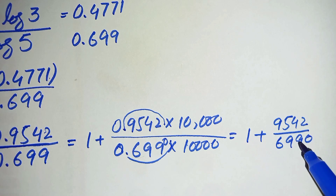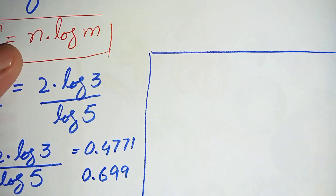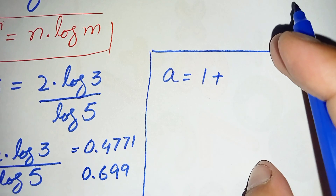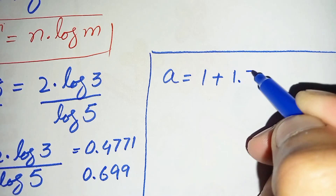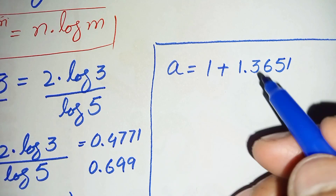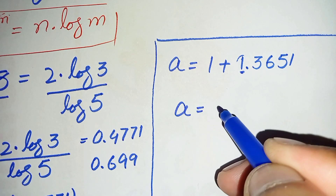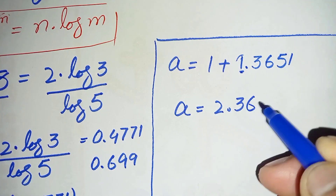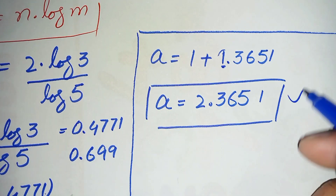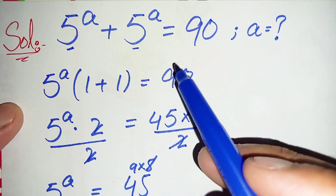We divide 9,542 by 6,990 using long division and get approximately 1.3651 up to four decimal places. Adding the two numbers: the whole number 1 plus 1.3651 gives a is equal to 2.3651. So finally, a equals 2.3651 is our answer and the value of a in this exponential equation.